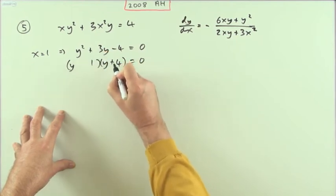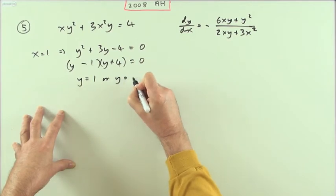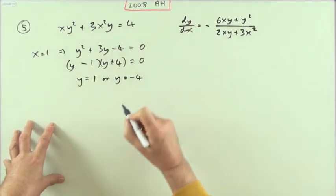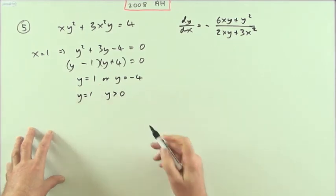That goes to the greater 1, in other words y equals 1 or y equals negative 4. But it's in the first quadrant, it said that, so that means that y equals 1 as y was greater than 0.